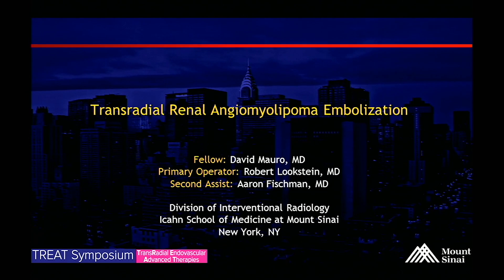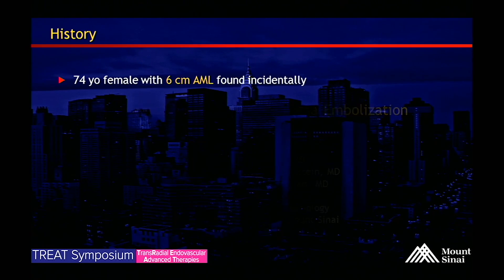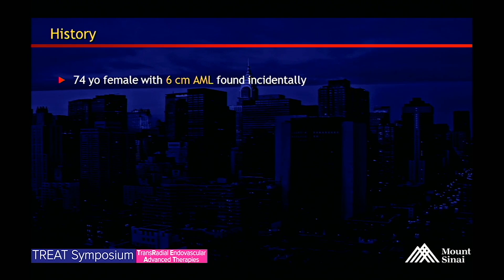This is a case of a transradial renal angiomyolipoma embolization. This is a 74-year-old female who presented with abdominal pain. On her CAT scan, she was found to incidentally have a 6-centimeter right AML.